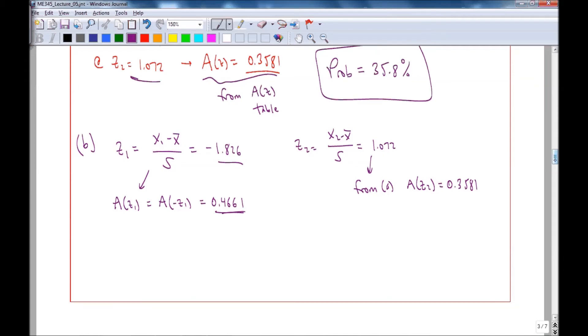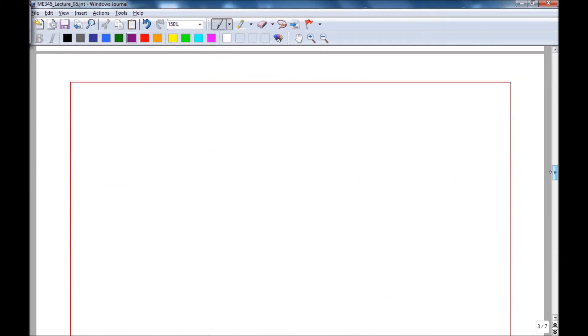And so again, it's good to draw a diagram so that we know which areas we're interested in. Here's our original f of x versus x, our original curve. We are interested in velocities between x1 and x2. So we're interested in this area.